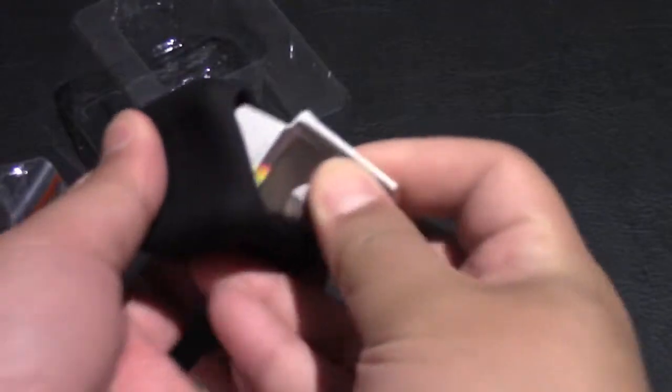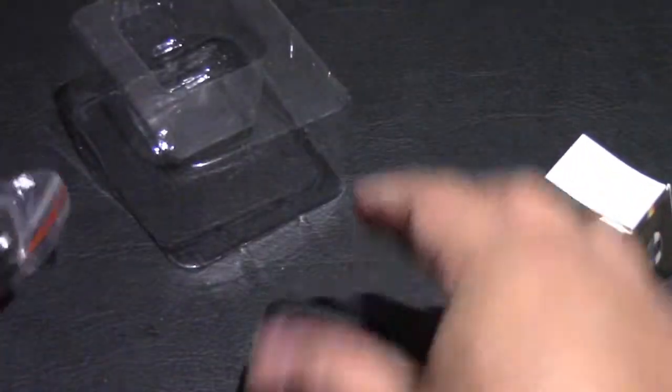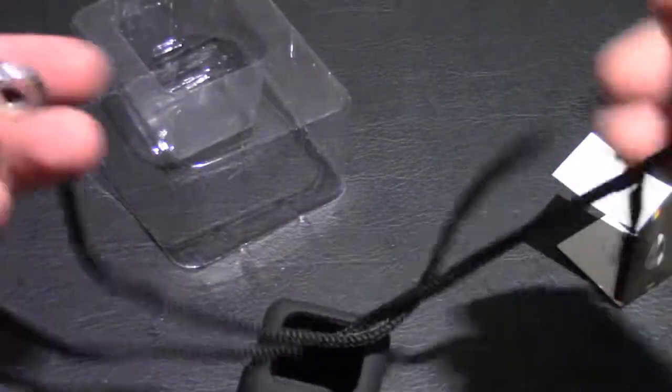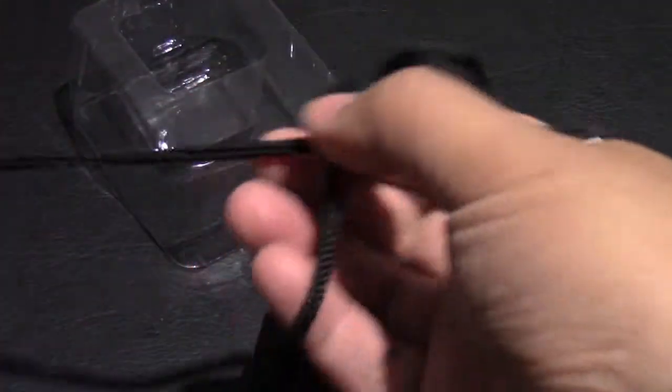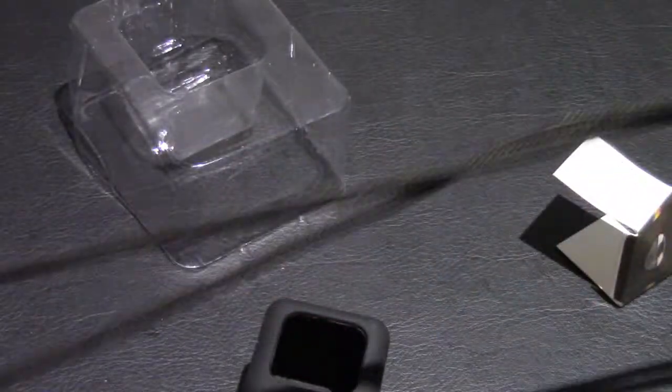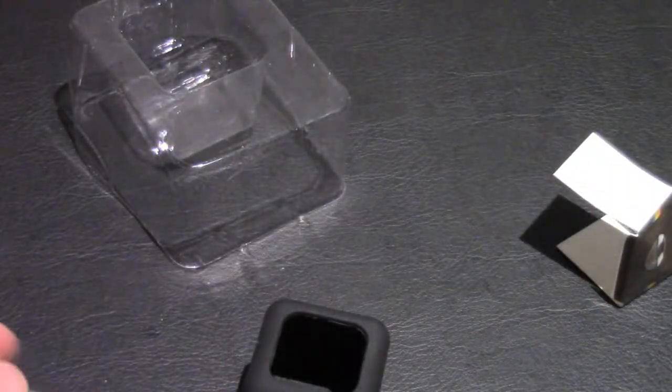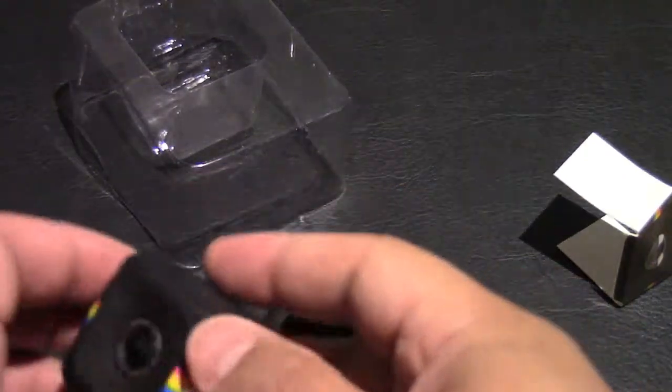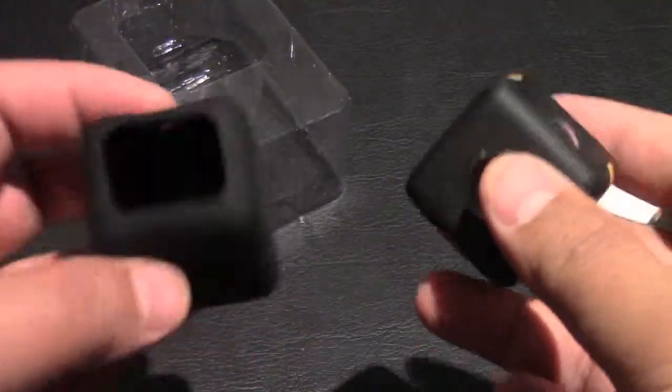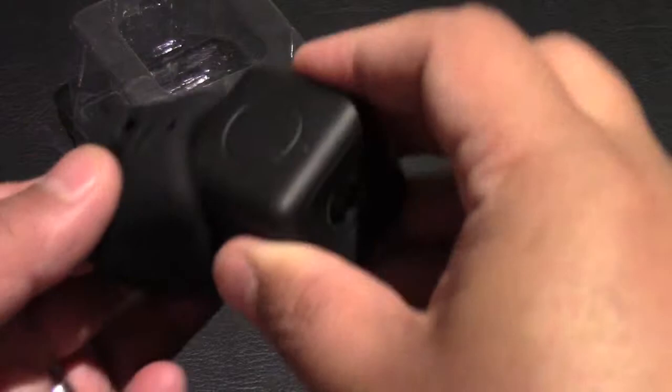There's the lanyard, there's the little clip that it comes with also. Just wanted to see how something like this would look around your neck. It's advertised on Amazon as a necklace lanyard, so I figured it'd be a good idea to maybe get this and have it around my neck so I don't have to hold a camcorder in my hand all the time.